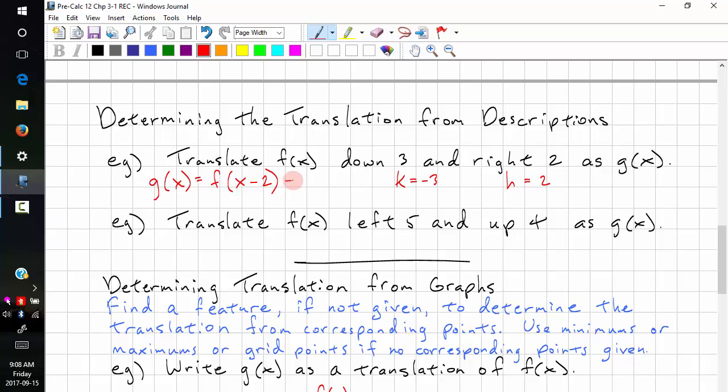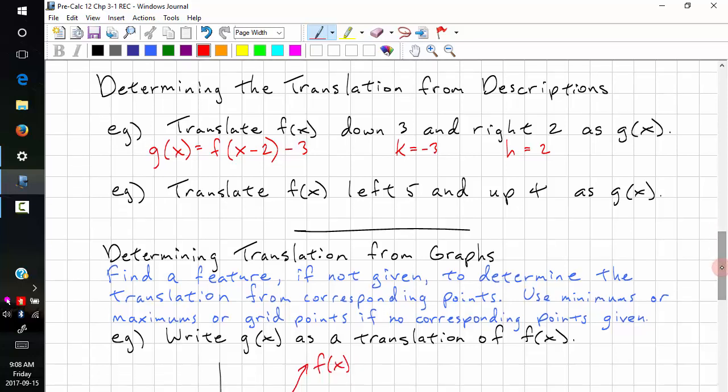So we don't put plus minus, we just put minus. Translate f of x, left 5, and up 4. This is not in the same order, so watch the order. It's not always given the same way. Watch order. Left 5, so this means h equals negative 5, and up 4, k equals 4. So g of x equals f of x minus negative 5, so that's x plus 5, and plus k, so plus 4. Make sure you write this as an equation. You can't just write f of x minus 2 minus 3. It needs to be g of x equals f of x minus 2 minus 3.